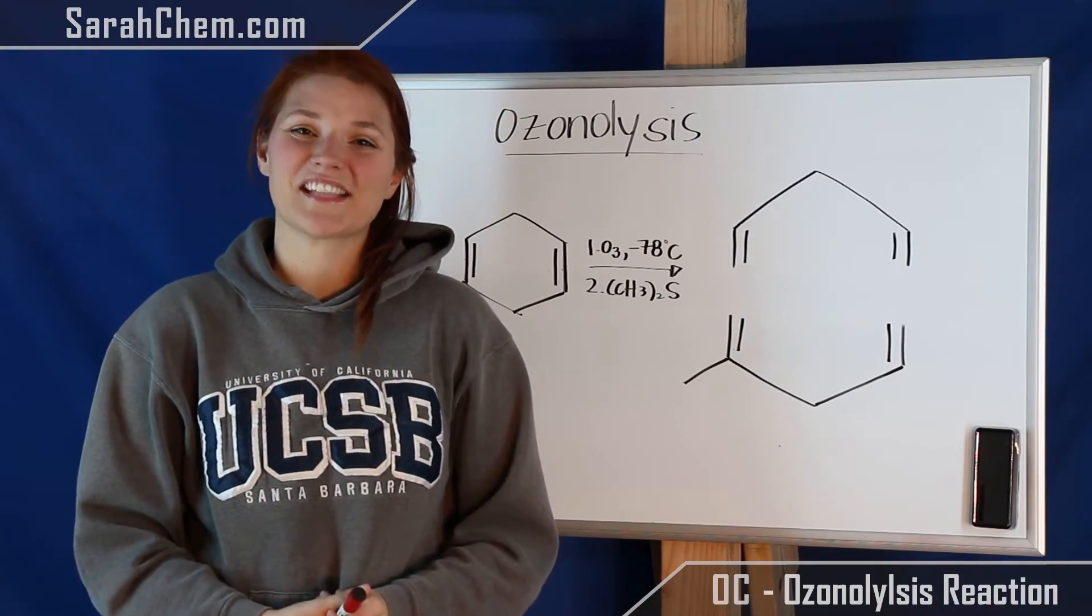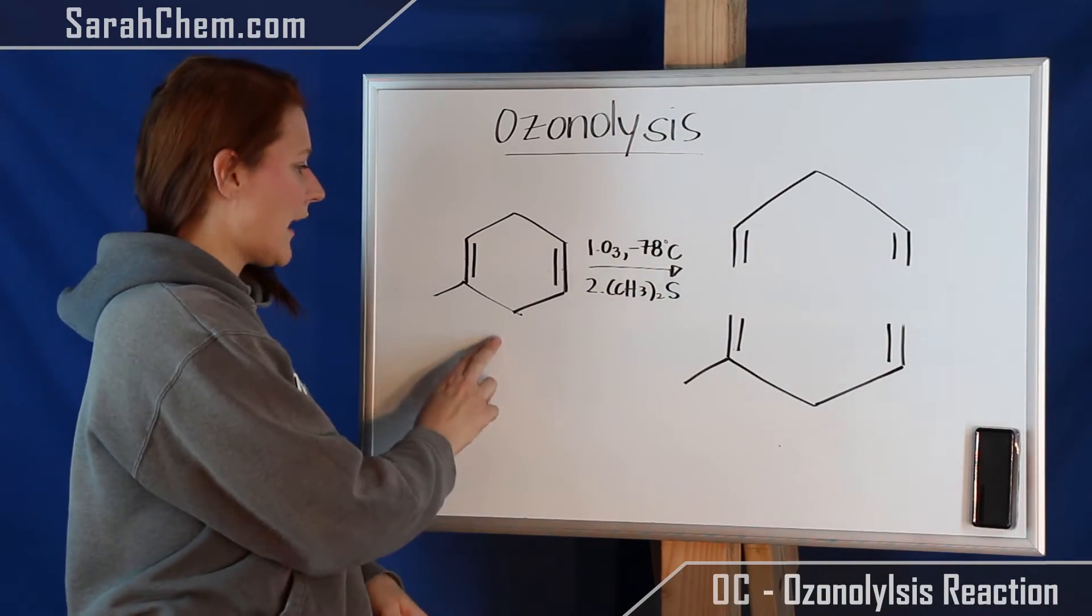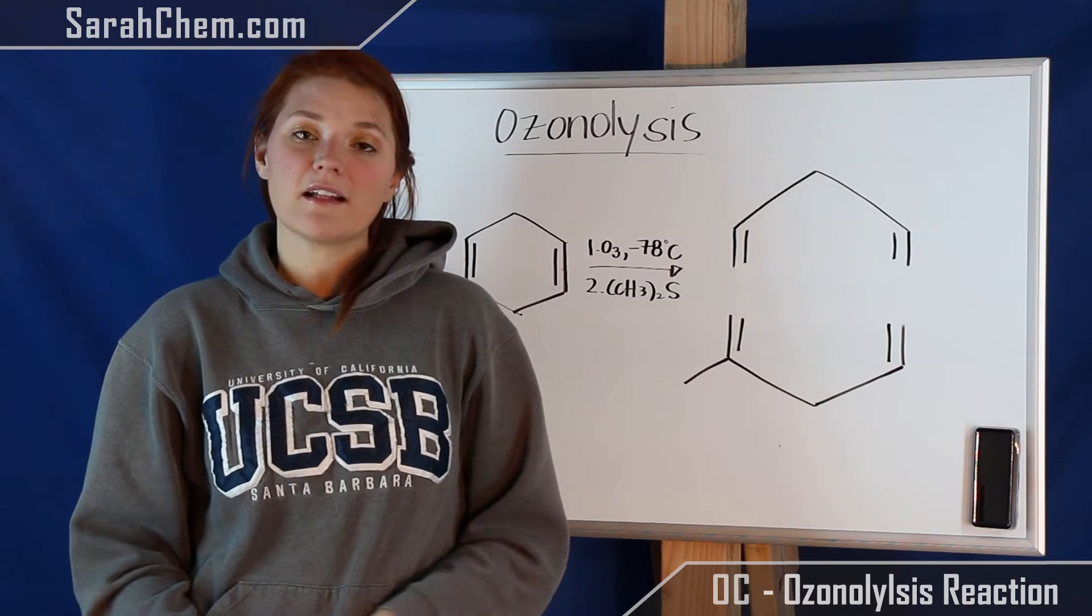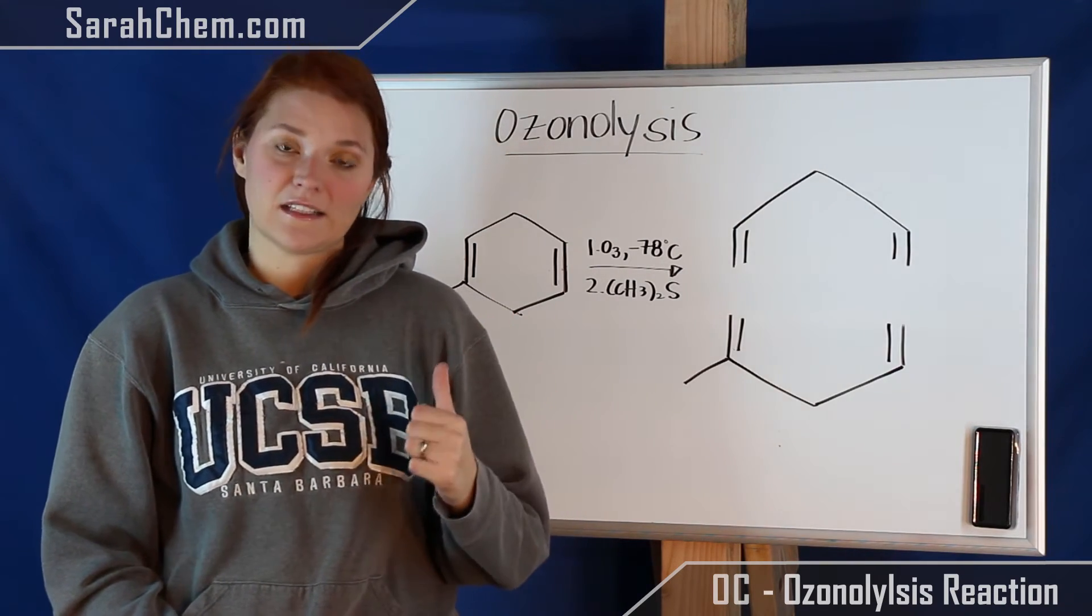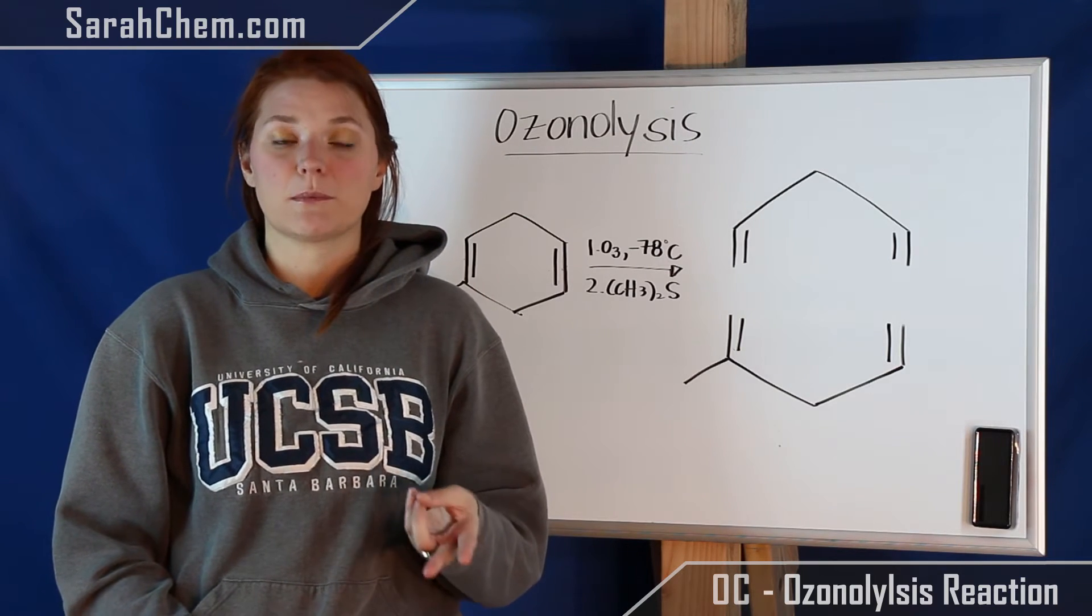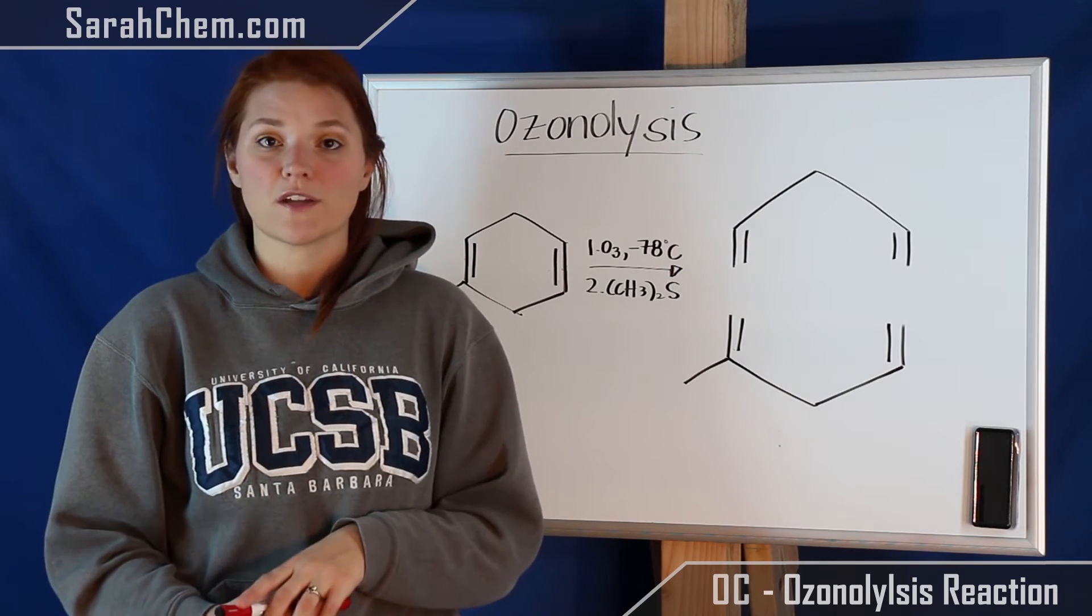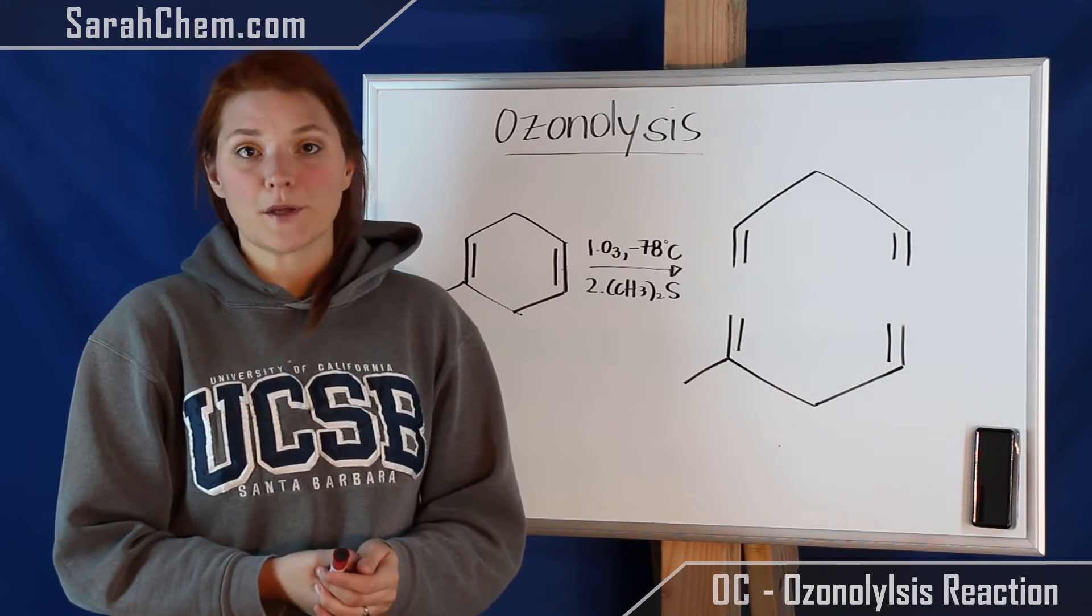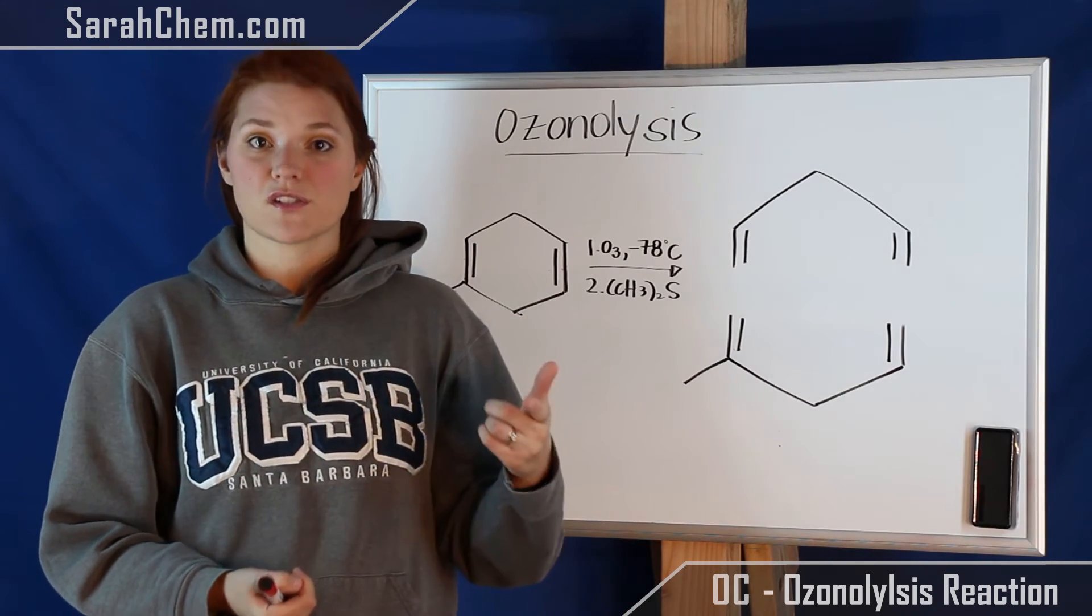Okay, so let's take a look at our example. If we look over here at our reactant, we see that we have our alkene. Now something really important to note about that alkene is that it is a diene, meaning it has two carbon-carbon double bonds in it, and both of them will undergo ozonolysis. For example, if there was a third carbon-carbon double bond in there, that would also undergo ozonolysis.